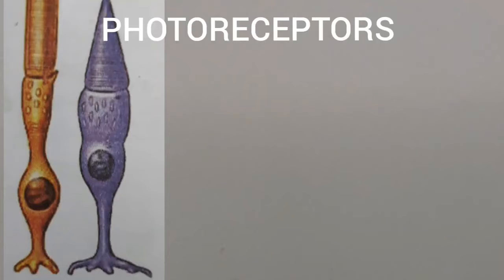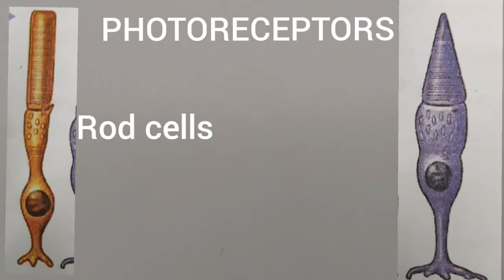Photoreceptors are of two types. They are rod cells and cone cells. Rod cells are more in number than cone cells.